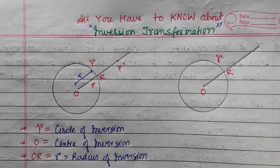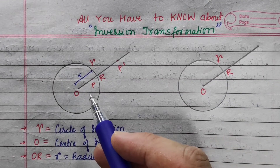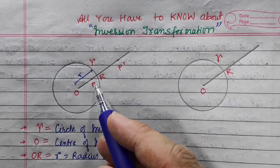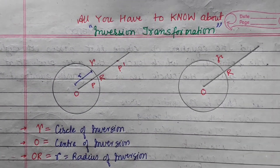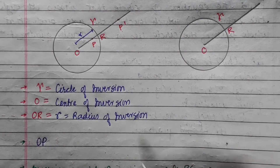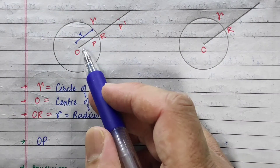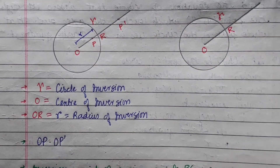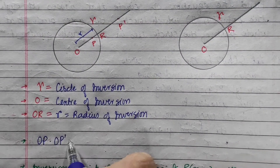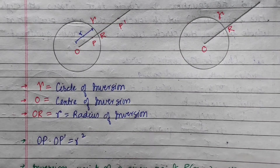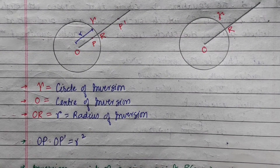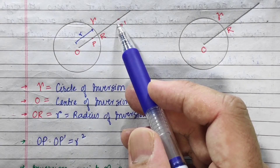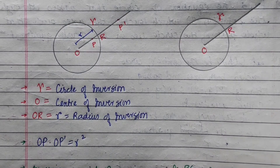Now, looking at a small r: this is the center of the object point. The object point maps to the image point, Op dash. This product is r squared — that is the inverse transformation. This is the center of the object into the center of the image, and this is the square of the radius.